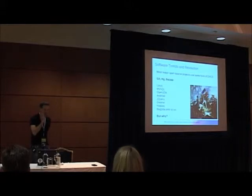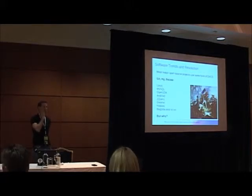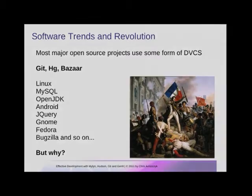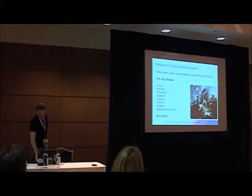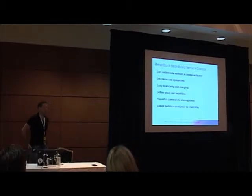Recent popularity has driven a lot of these distributed version control systems — like Git, Mercurial, and Bazaar — to be used by almost every open source project. Slowly, more corporate-related projects are starting to adopt it, but it has taken some time. There are just too many benefits with distributed version control. It's hard for me to name one major open source project that does not use some form of distributed VCS — Apache using Subversion might be the only one I can think of.